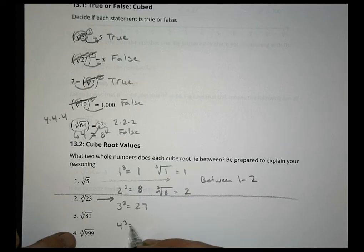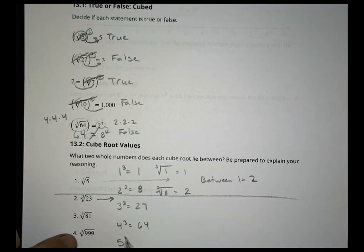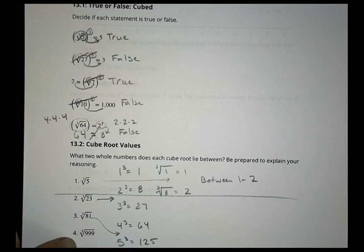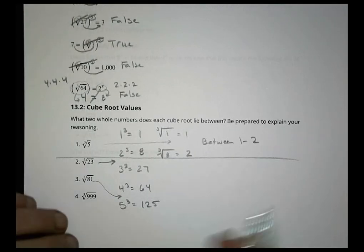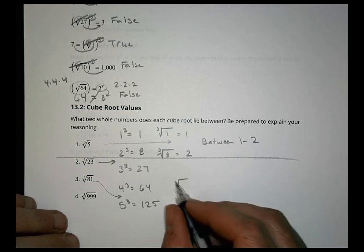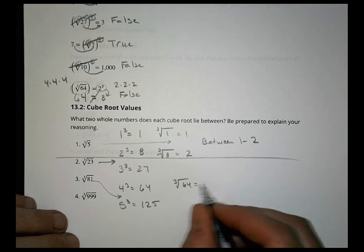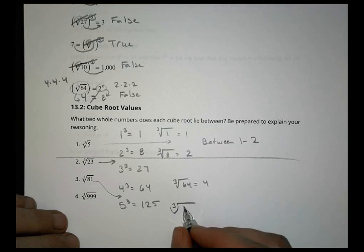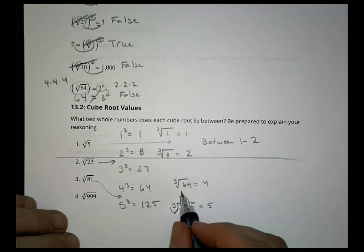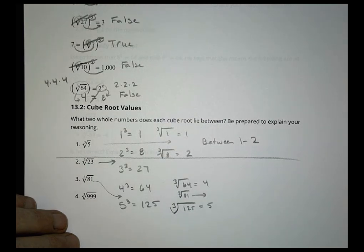Now 4 cubed we've already decided is 64, and 5 cubed is 125. So when I get to the cube root of 81, that's going to be between 4 and 5, because the cube root of 64 is 4 and the cube root of 125 is 5. So the cube root of 81 is going to be between 4 and 5.